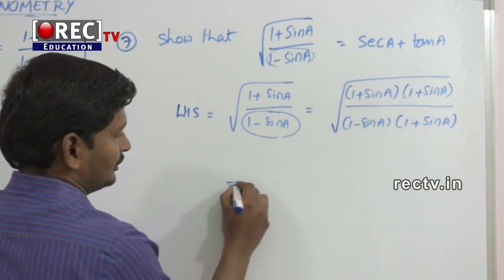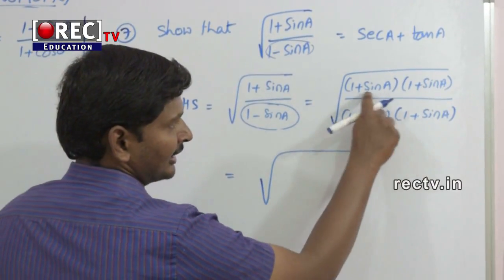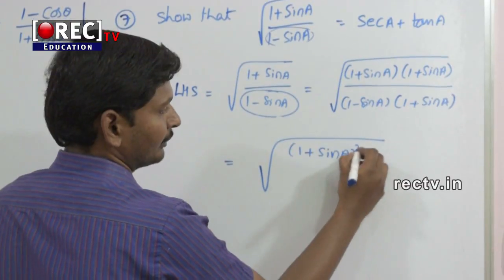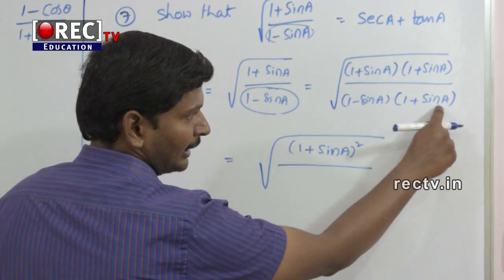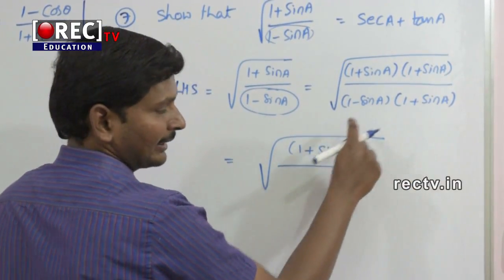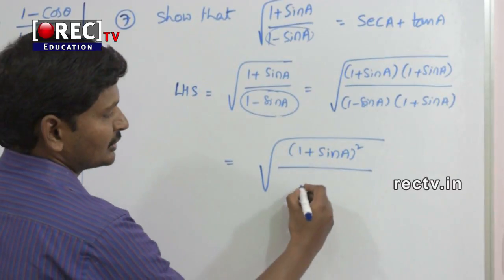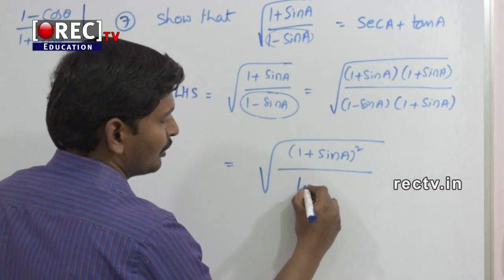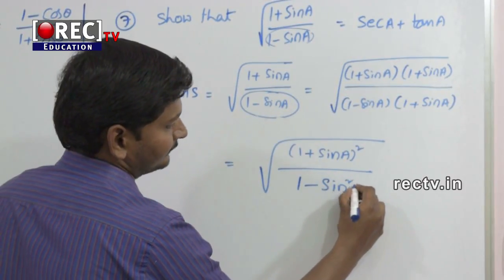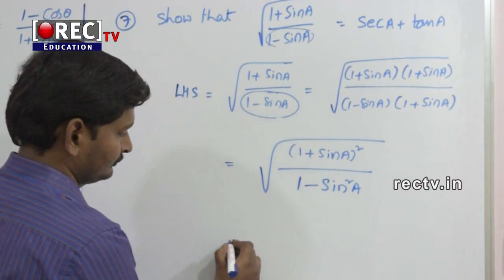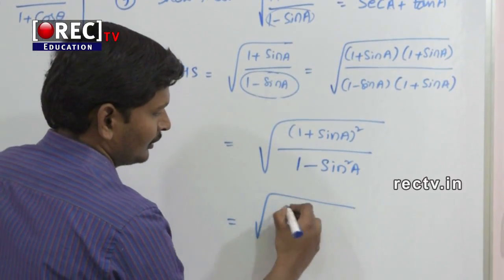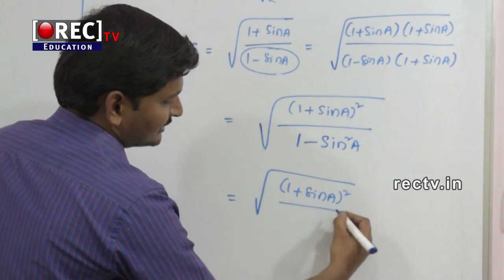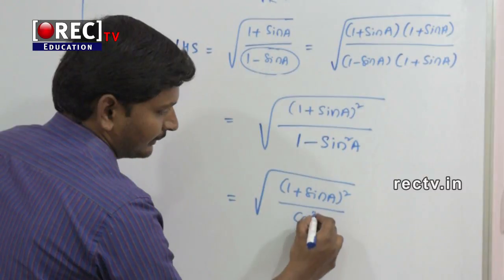The numerator has same terms, so we get 1 plus sin a whole square in the numerator. The denominator is in the form a plus b into a minus b, which equals a squared minus b squared — that means 1 squared minus sin squared a, which is 1 minus sin squared a. So we have square root of 1 plus sin a whole square over 1 minus sin squared a, and 1 minus sin squared a is nothing but cos squared a.